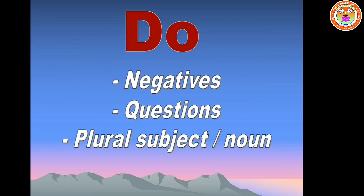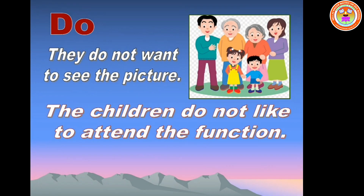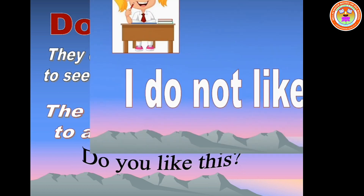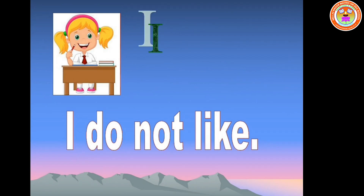It will take negative immediately after it. Example: they do not want to see the picture. The children do not like to attend the function. Do you like this? Do is used to frame questions. We have to use do after the pronoun I. Example: I do not like this. Remember children: I do not like, and not I doesn't like. After I, we should not use does. I doesn't is the wrong form. When we speak, we have to say I don't like.